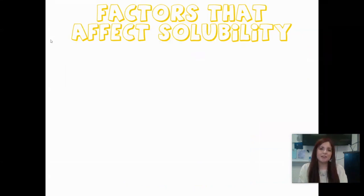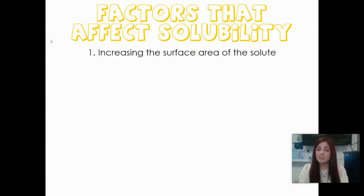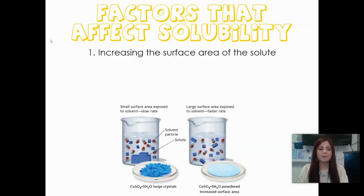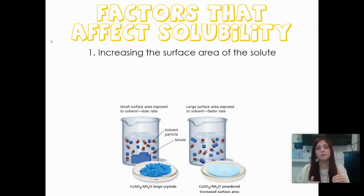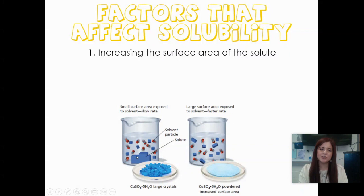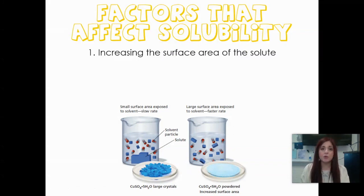There are a couple of different factors that could affect how soluble a particular solute is. One of those is increasing the surface area. If you have some solute particles that are very large, those solute particles can't come into contact with the solvent as much. But if you have a big hunk of something versus that same thing powdered up, the powder has a lot more surface area, which means the solvent can interact with the solute in many more places than it can with the large crystal. So you can take something with a mortar and pestle and grind it up into a powder — that tends to increase solubility.